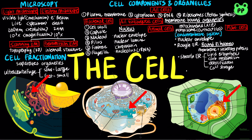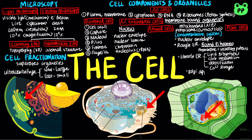Molecules produced by the endoplasmic reticulum are transported by vesicles to the cis side of the Golgi apparatus, which consists of flattened membrane sacs called cisternae. The Golgi apparatus modifies products of the endoplasmic reticulum, manufactures certain macromolecules, and sorts and packages materials into transport vesicles, which exit through the trans face.